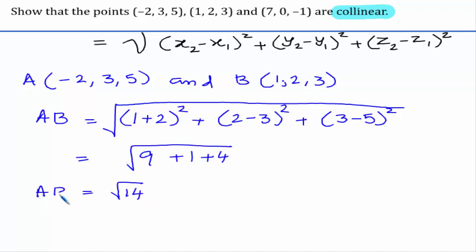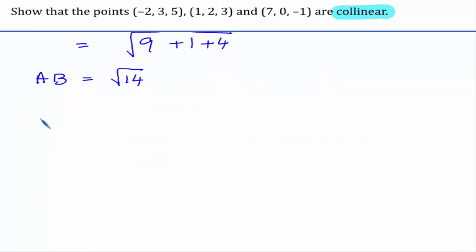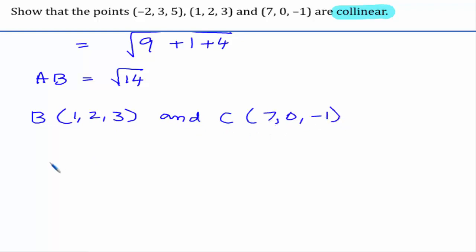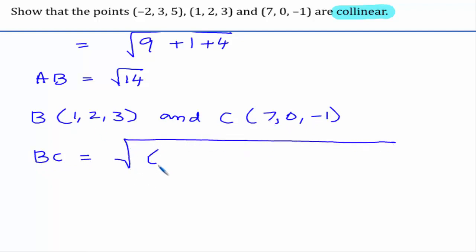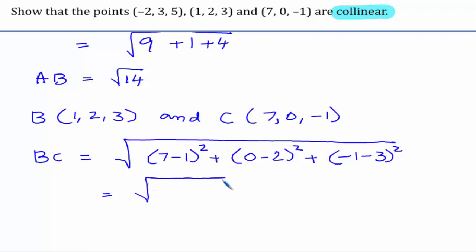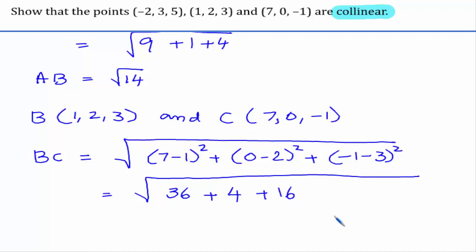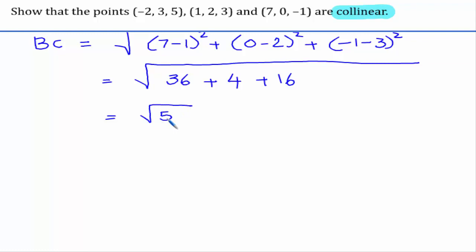So the distance between A and B is square root 14. Now let us consider B as (1, 2, 3) and C as (7, 0, -1), and find the distance BC. This is the square root of (7 minus 1) whole square plus (0 minus 2) whole square plus (minus 1 minus 3) whole square. On simplification: 6 squared is 36; minus 2 whole square is 4; minus 4 whole square is 16. We get square root of 56, which simplifies to 2 root 14 units.